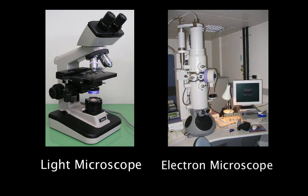Now, one of the main differences between the light microscope and the electron microscope is their resolution. The electron microscope has a much higher resolution than the light microscope. But what does this mean?